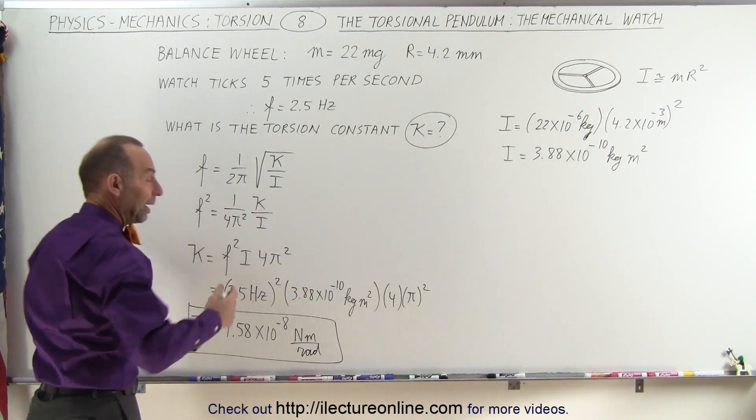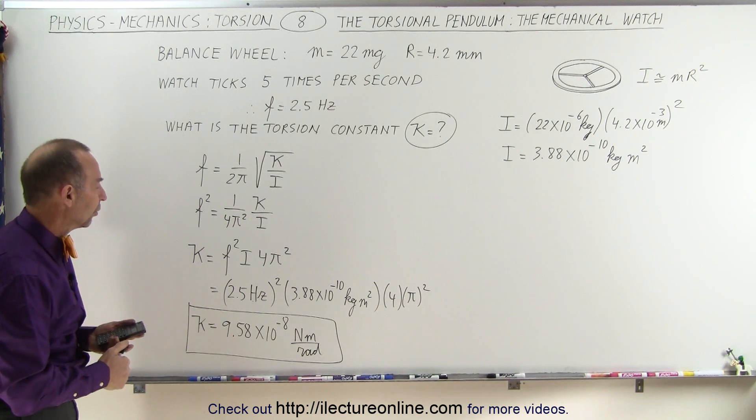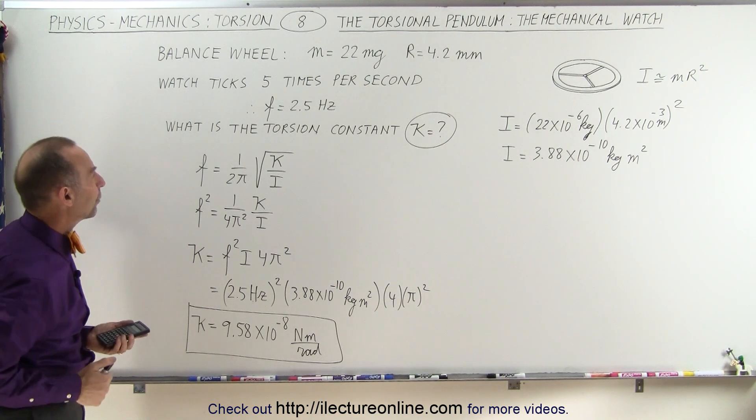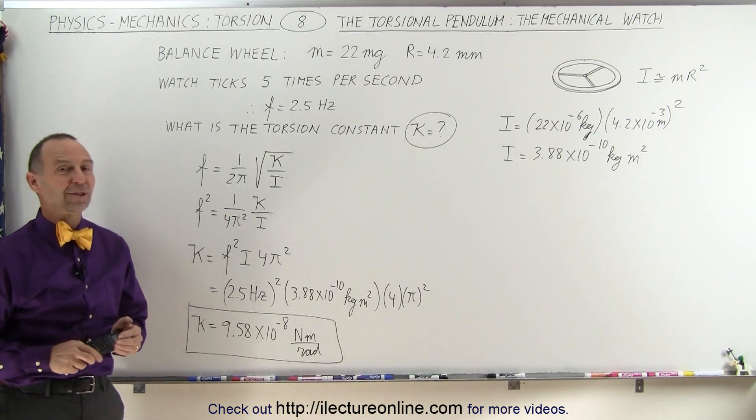Of course we don't have to write 'divided by radian' because radian is not a unit, but at least it gives you some perspective. So torque divided by radians, and that gives us the constant we're looking for. And that's how it's done.